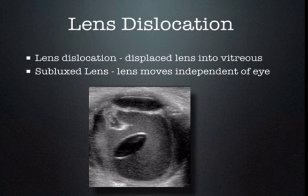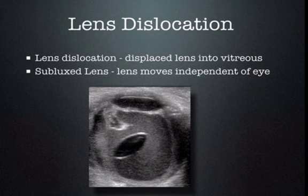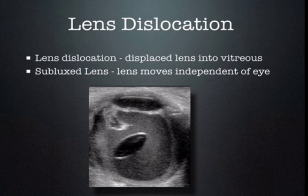Lens dislocation will occasionally be encountered. With a lens dislocation, the lens is completely removed from its apparatus and is generally in the vitreous — usually very easy to see because there's a lot of bleeding. We can see in this picture the hyperechoic blood surrounding the lens is very easy to see. A subluxed lens is more difficult to see as it is in its usual place when the eye is still, so you have to have the person move their eye back and forth — you'll see the lens move independent of the eye.